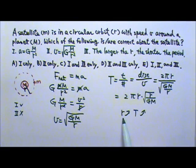Which means the higher the orbit, the longer the period. So 3 is wrong. Therefore, the answer must be a.